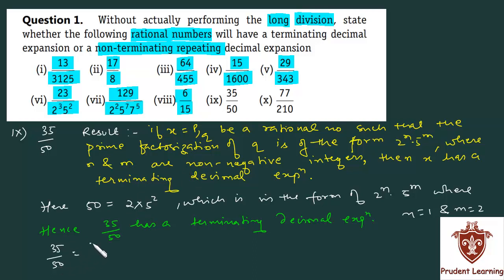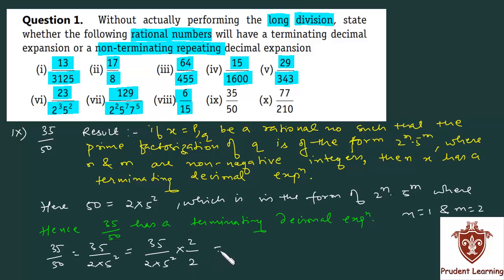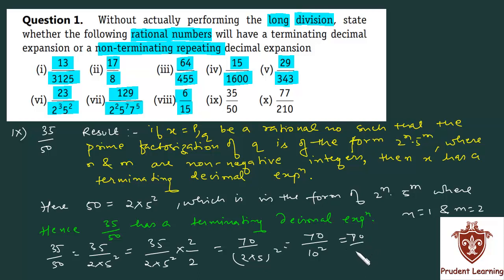35 upon 50 can be written as 35 upon 2 into 5 square, which can further be written as 35 upon 2 into 5 square, multiplying numerator and denominator by 2, giving 2 into 5 whole square, which is equal to 70 upon 100, which is equal to 0.7.